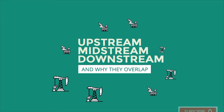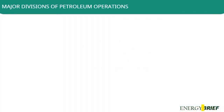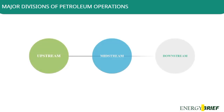Petroleum activities are divided into three major segments: upstream, midstream, and downstream. These divisions are key to understanding the complexities of the oil and gas industry and understanding the types of companies that operate under each.